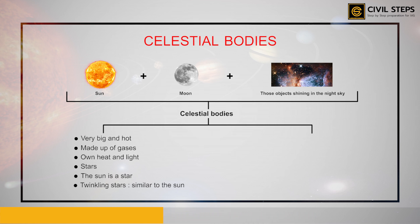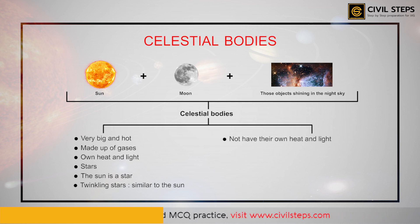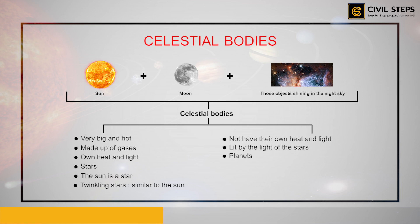Even the Sun is a star. Countless twinkling stars in the night sky are similar to the Sun, but we do not feel their heat or light, and they even look so tiny. The reason is because they are very far from us. However, there are even some celestial bodies that do not have their own heat and light — they are lit by the light of the stars.